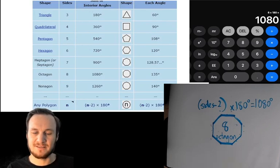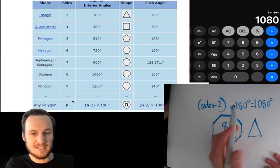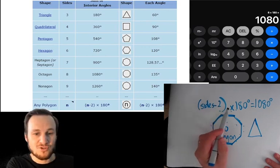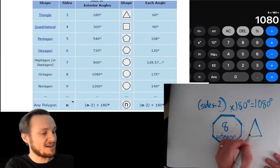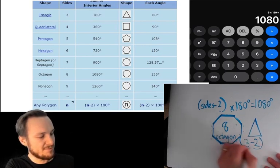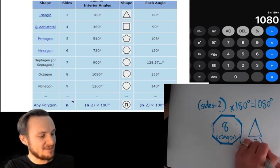So if we look here, let's go back on our thing and see what an octagon was. An octagon was 1080, so that worked. Let's go through it again. Let's have a triangle because a triangle is the easiest one you can do. The formula is sides, the amount of sides, take away two, times by 180. How many sides does the triangle have? Three. Take away two, which equals one, and then you times that by 180.